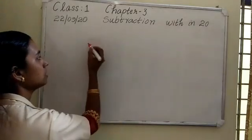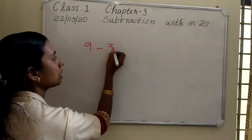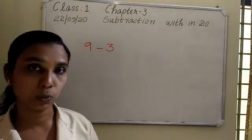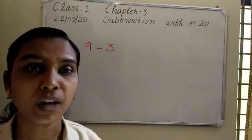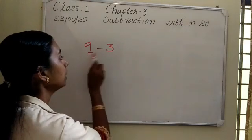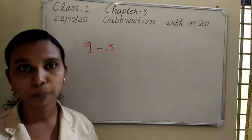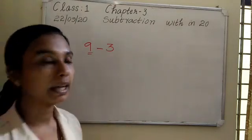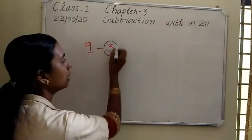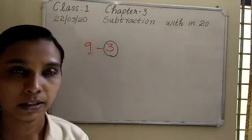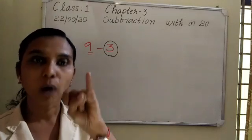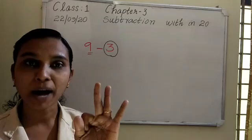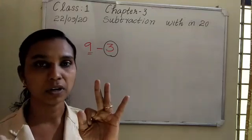I have to subtract 9 minus 3. How can I subtract by counting backward? First of all, we have the bigger number 9. Take the bigger number 9 in your mind and take the smaller number 3 on your fingers. All of you take 3 on your fingers: 1, 2, 3.